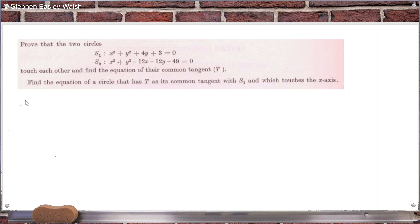So, the first circle, I can write that as x minus 0 squared plus y plus 2 squared. That would give me x squared plus y squared plus 4y plus 4. But I just need a plus 3, so I need a minus 1. So that's equal to 1 then. So that centre is at 0, minus 2 with radius of 1.